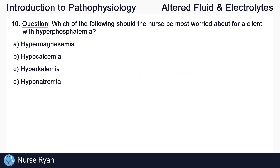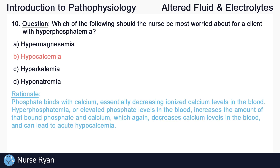And for the last question of this quiz, number ten: which of the following should the nurse be most worried about for a client with hyperphosphatemia? The answer here is B, hypocalcemia. Phosphate binds with calcium, essentially decreasing ionized calcium levels in the blood. Hyperphosphatemia, or elevated phosphate levels in the blood, increases the amount of bound phosphate and calcium, which decreases calcium levels in the blood and can lead to acute hypocalcemia.